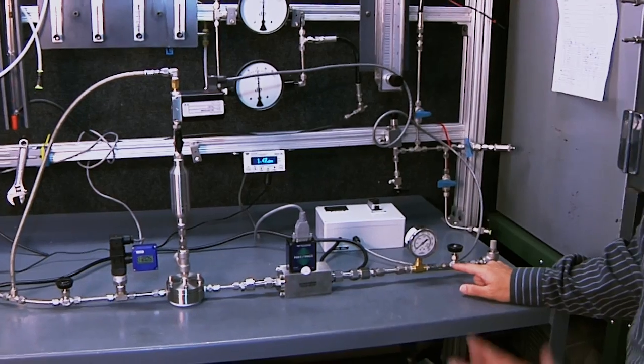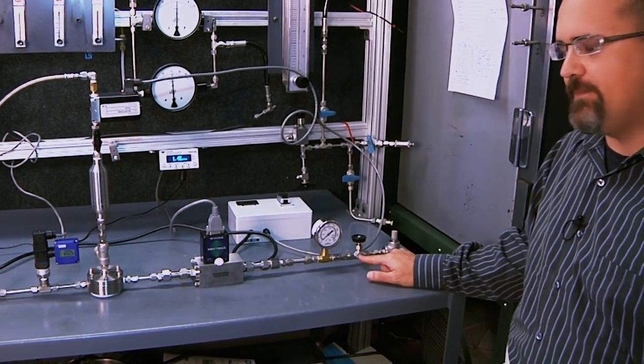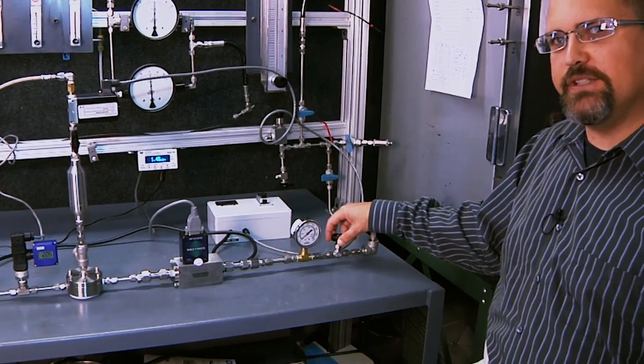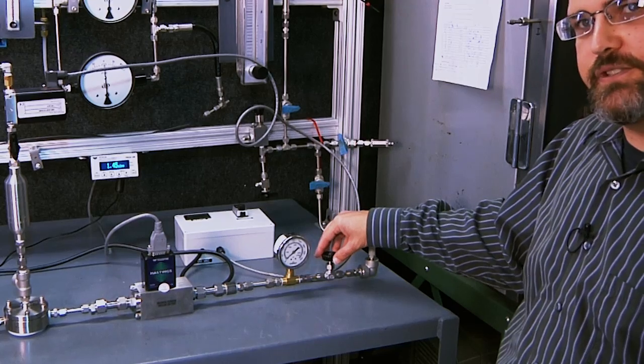The user's system is being represented by this variable orifice right here. I can increase or decrease the system restriction. So let's go ahead and do that. Right now we're at about zero system restriction.